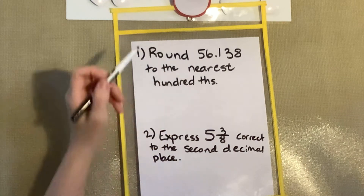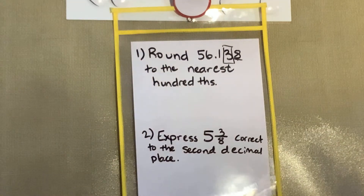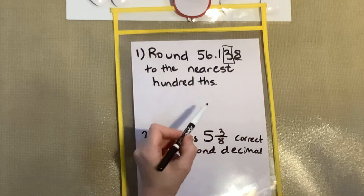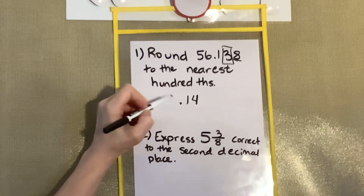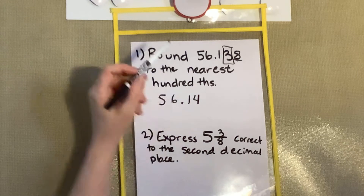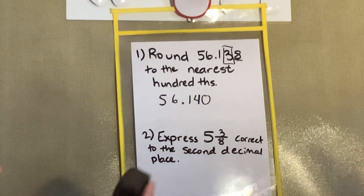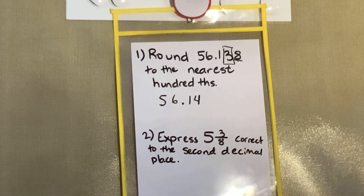When we're rounding, we want to put a box around the digit we're rounding to and then underline the one next to it. We look to the right — eight, five or more, add one more — which means this three becomes a four. Everything to the left stays the same including the decimal point. Everything to the right becomes a zero, but if it's a zero here, that's what we'd call an unnecessary zero and we're working on removing those. So we get 56 and 14 hundredths.